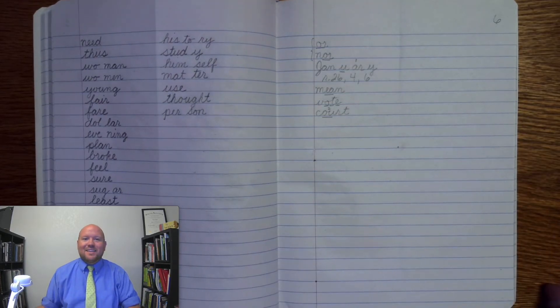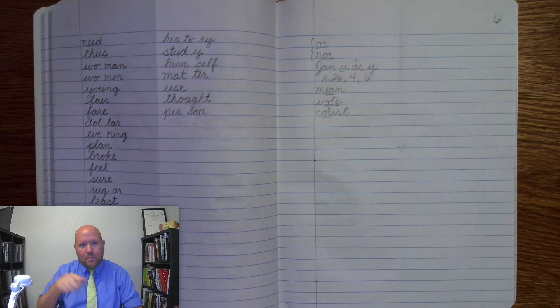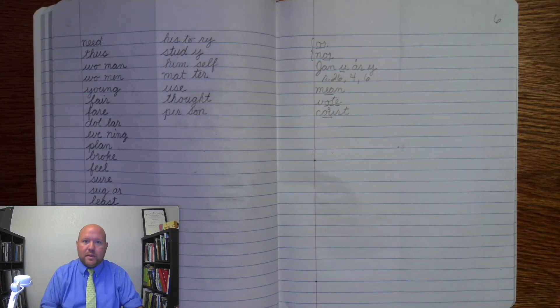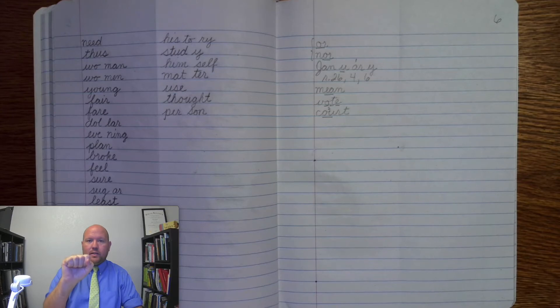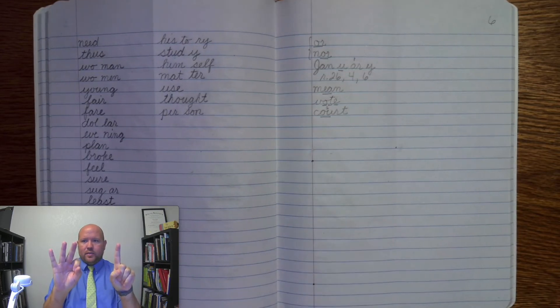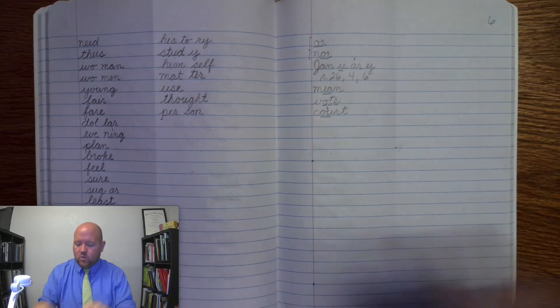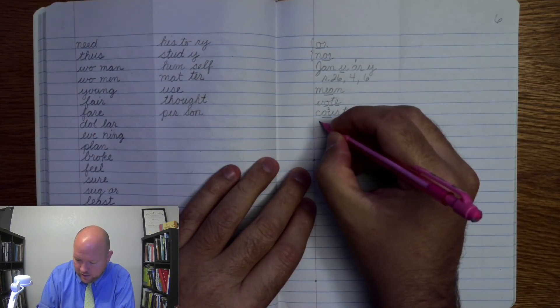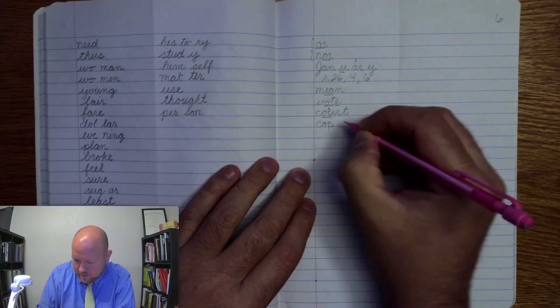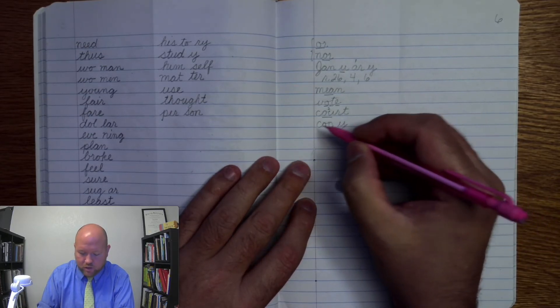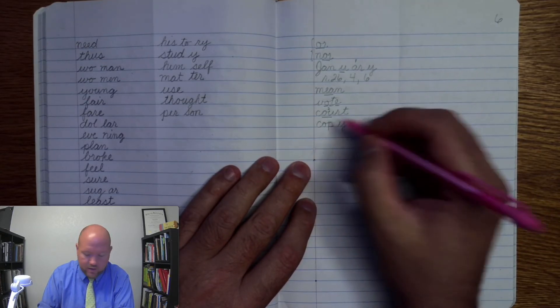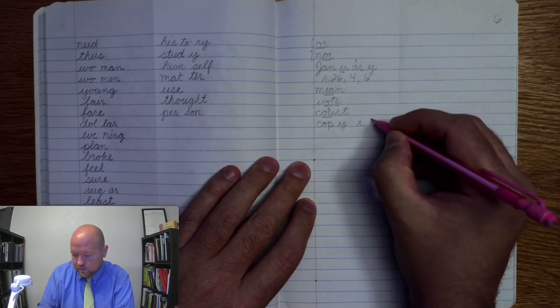All right. The next word is copy. Like to copy something. To make a duplicate of it. To make a second one of it. Okay. Copy. Base word. Copy. Cop. I. C. O. P. I. Copy. Okay. All right. And this is making an I sound. What I have to use at the end of the word. Okay. Copy. Cop. I. Markings. C. O. P. I. Rule. Six.